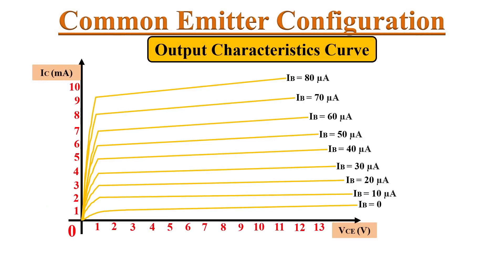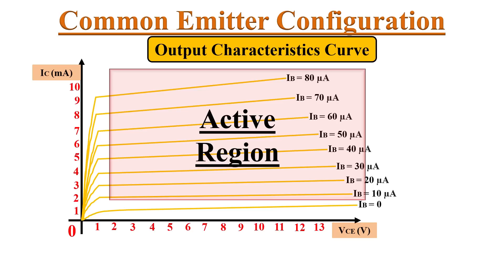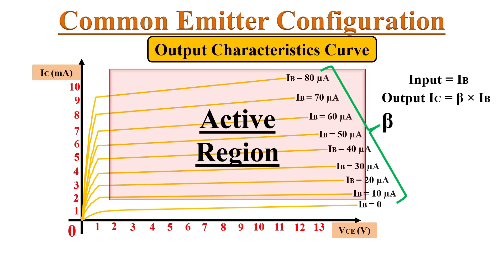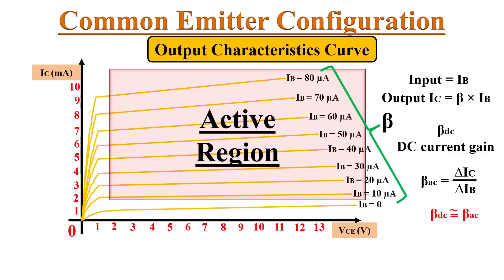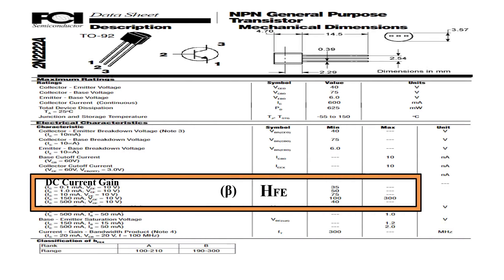Whenever BJT is used as an amplifier, it is used in the active region. In the active region, base current IB gets amplified by the factor of beta — meaning the output current IC equals beta times IB. This beta is known as the DC current gain of the common emitter configuration. If we talk about AC current gain, beta_AC is given as delta IC divided by delta IB — that is, the change in collector current divided by the change in base current. Usually the values of beta_AC and beta_DC are not exactly the same, but since they are very close, they are often used interchangeably. Beta values can be found in the transistor's datasheet.